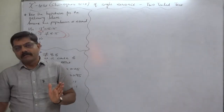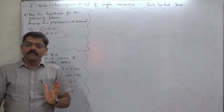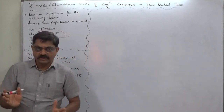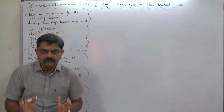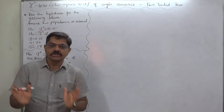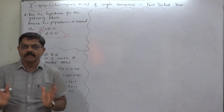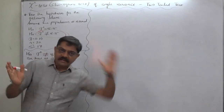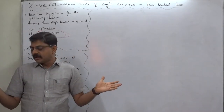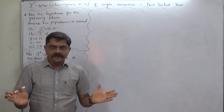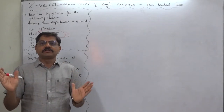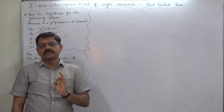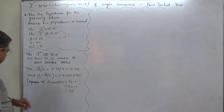One is the lower level critical value of chi-square and another is the upper level critical value of chi-square. The condition for acceptance or rejection: if the calculated chi-square is less than the lower level or greater than the upper level, then the null hypothesis will be rejected. If the calculated value falls between these two levels, then only the null hypothesis will be accepted.